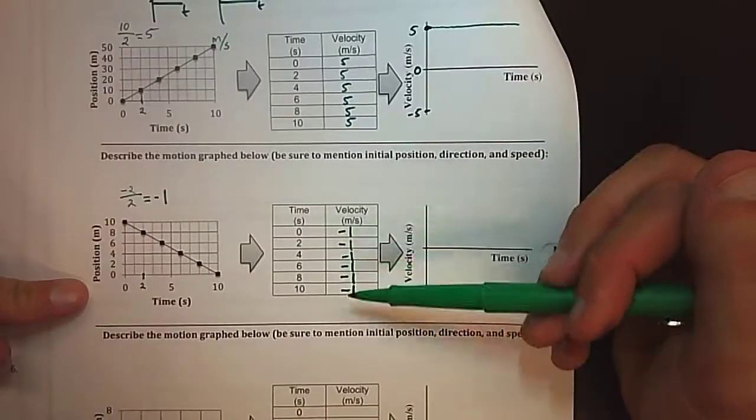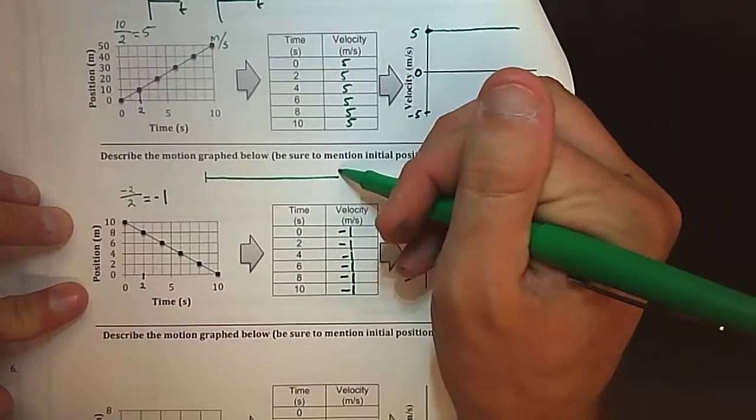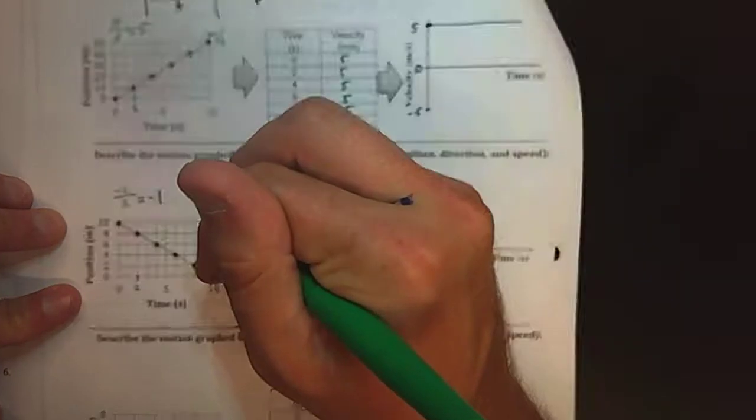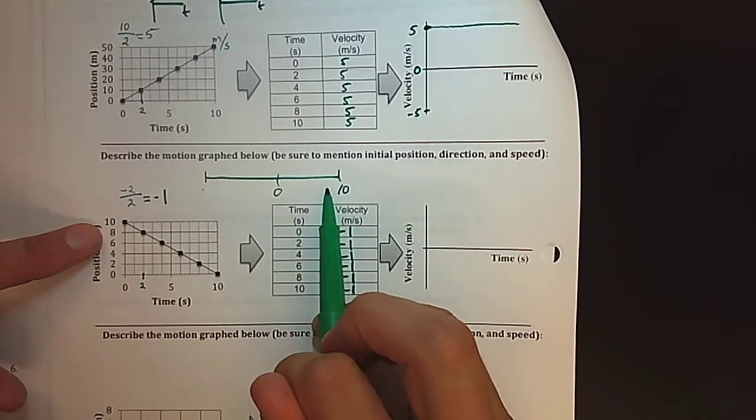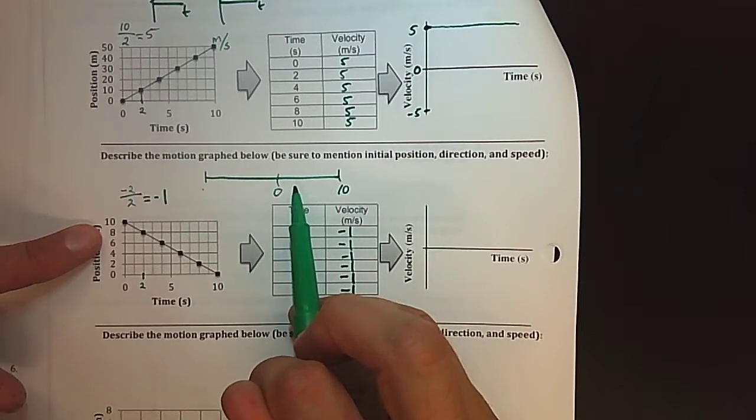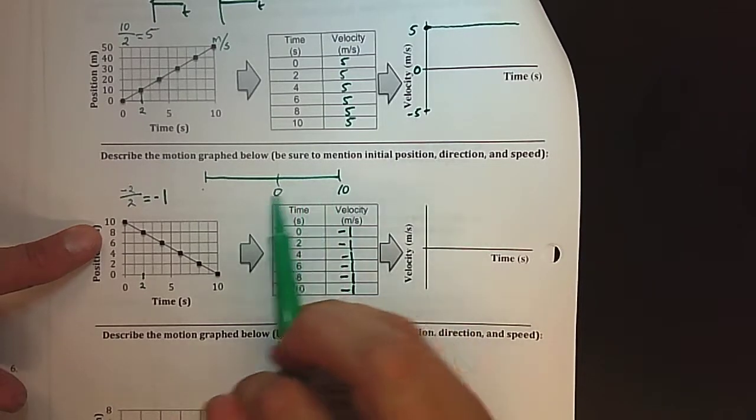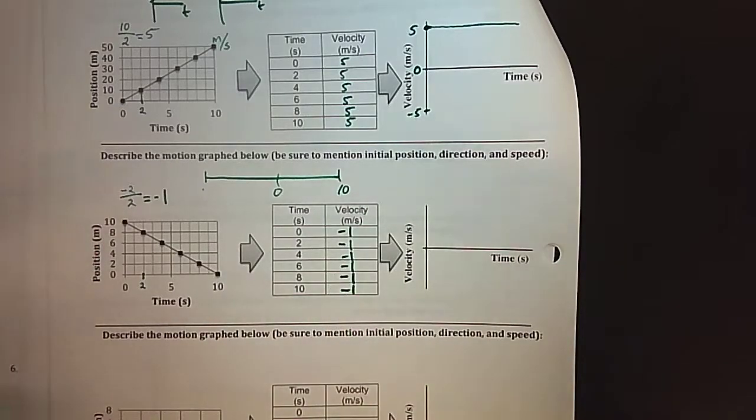If I have a number line right here and this is zero and this is ten, it starts at ten and then as time increases it goes to eight, six, four, two, zero. It's going to the left, in this case we would say in physics terms that it's going in a negative direction.